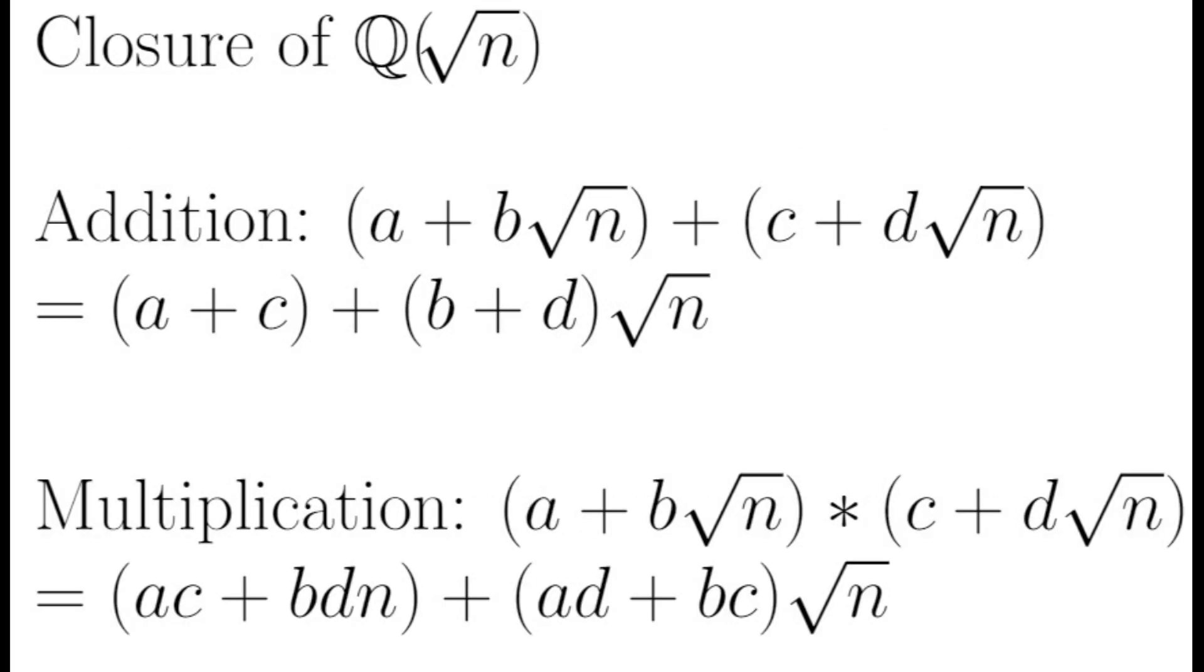To show this, consider Q with root n adjoined. If n is a perfect square, then we're left with just Q, so we'll assume n is not a perfect square.